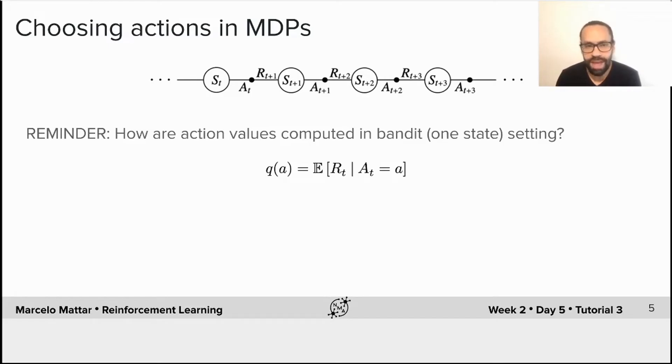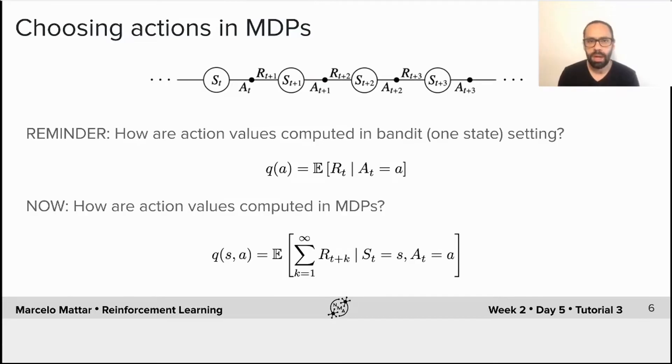So if the agent computes this action for all actions, then the agent can pick the action that has the highest Q value, and that would maximize its rewards.